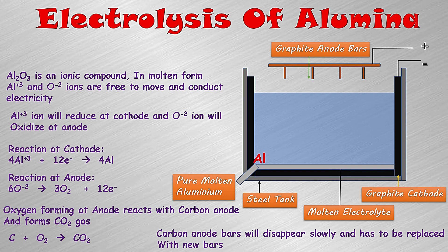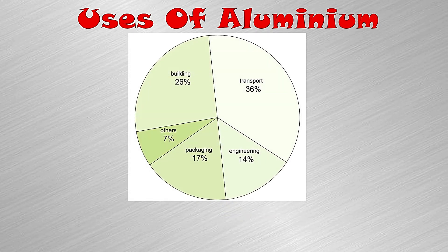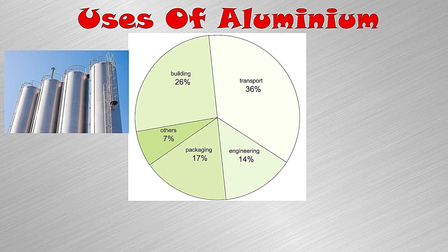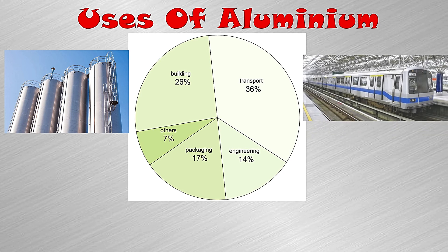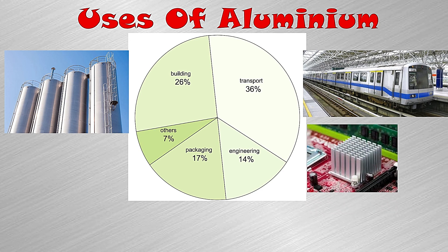Due to this formation of carbon dioxide, the carbon anode bars disappear slowly and have to be replaced with new bars. This was the whole process by which pure molten aluminium is formed and carbon dioxide is released. From this electrolysis we get pure aluminium, which is a very useful metal. For example, 26 percent of aluminium is used in construction and buildings, and 36 percent is used in transport — many train and car bodies are made of aluminium because it is a lightweight metal.